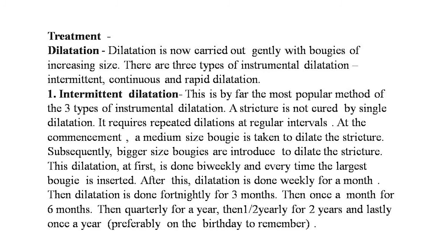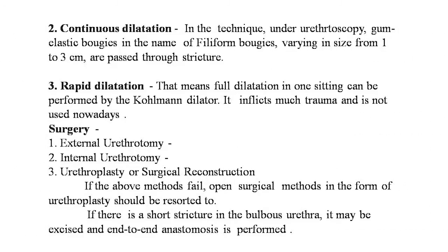The second type is continuous dilatation: under urethroscopy, gum-elastic filiform boogies varying in size from 1 to 3 centimeters are passed through the stricture. The third type is rapid dilatation — full dilation in one sitting — performed by the Kollmann dilator. This inflicts much trauma and is not used nowadays.